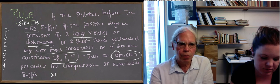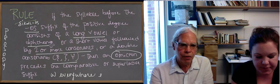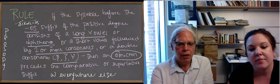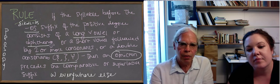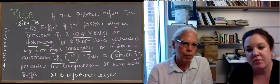So, if the syllable before the os contains a long vowel or a diphthong or a short vowel followed by two or more consonants or a double consonant, then you have an omicron before the comparative and superlative suffix, otherwise you have an omega. So, we just state that rule in this way, and you've got to meet one of these three conditions, then you have an omicron, otherwise you have an omega.